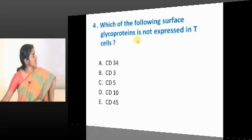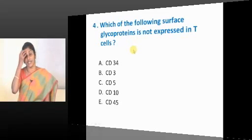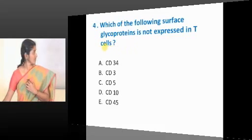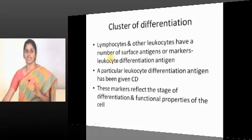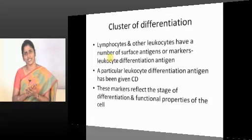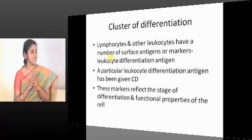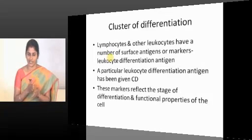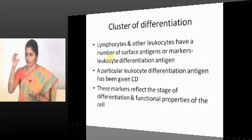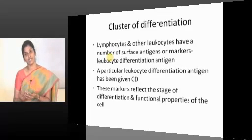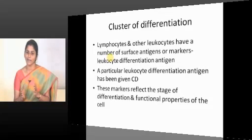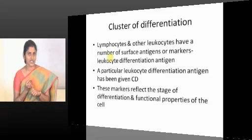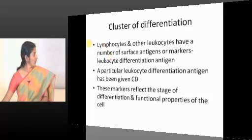Which surface glycoproteins are not expressed on T cells? This is a high yield but volatile area — the CD markers — which children usually find difficult. CD markers are surface markers present on these cells and many others. They tell us two things: lineage — if such a marker is there, it belongs to that lineage — and differentiation stage, since some markers are expressed at immature stages and others at mature stages.